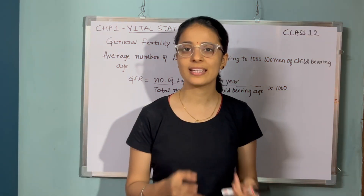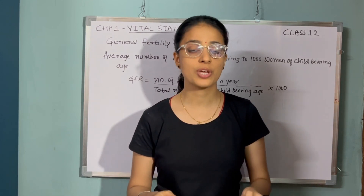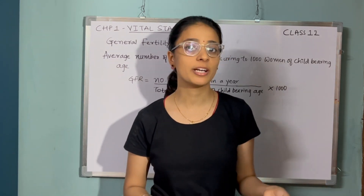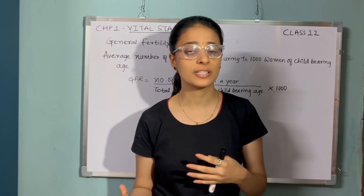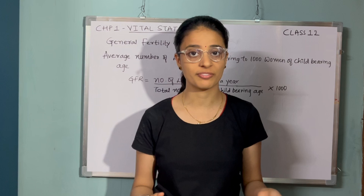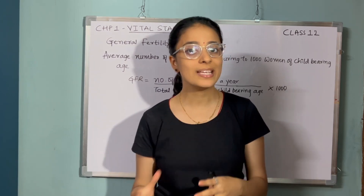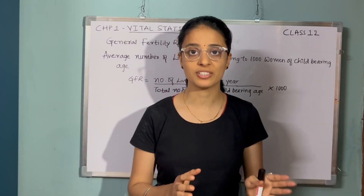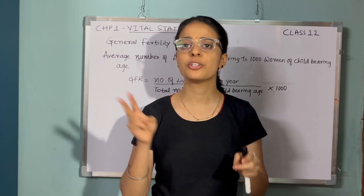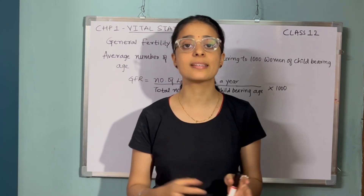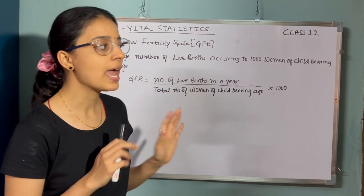We are studying Chapter 1 of Statistics, Second Year — Vital Statistics. In this chapter we have covered measurement of population. In a previous video we looked into what is fertility and different measurements of fertility, and we studied the solved problem of our first fertility measure, that is Crude Birth Rate. Today we will be looking into the second measurement, that is General Fertility Rate or GFR.